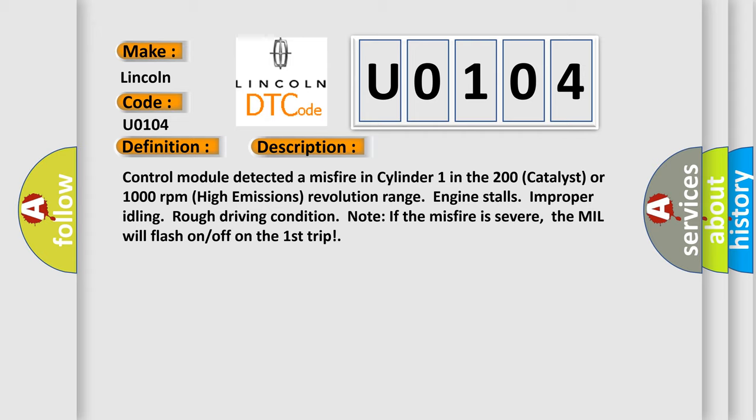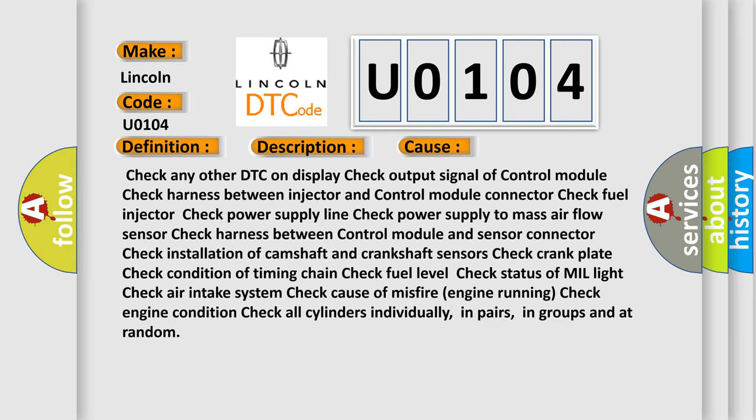Engine stalls, improper idling, and rough driving condition. Note: if the misfire is severe, the MIL will flash on/off on the first trip. This diagnostic error occurs most often in these cases: check any other DTC on display, check output signal of control module, check harness between injector and control module, connector check, fuel injector check, power supply line, check power supply to mass airflow sensor, harness between control module and sensor, connector check, installation of camshaft and crankshaft sensors, crank plate, check condition of timing chain, check fuel level, check status of MIL light, check air intake system, check cause of misfire, engine running condition, and check all cylinders individually, in pairs, in groups, and at random.